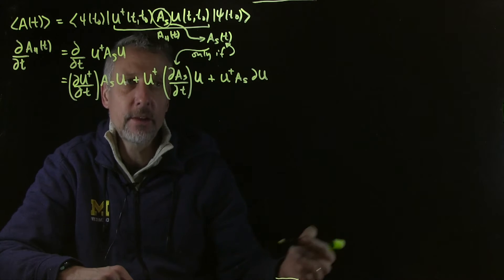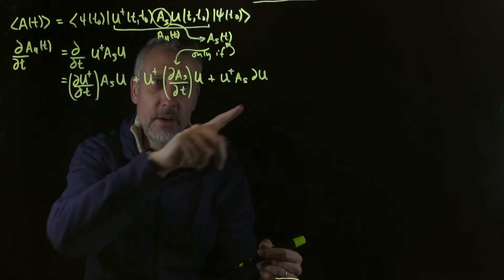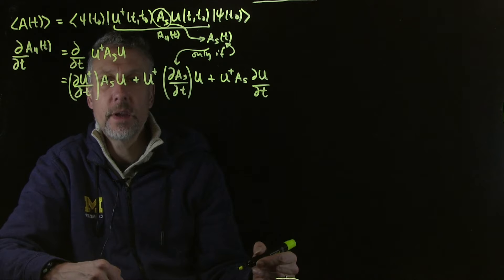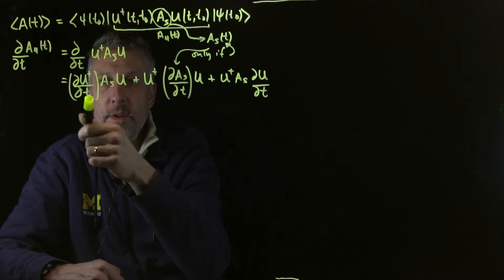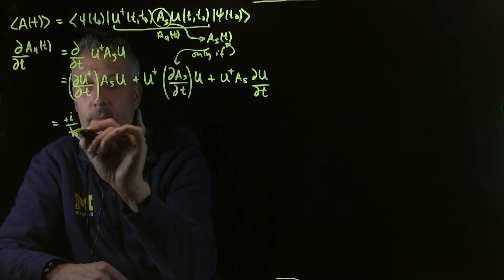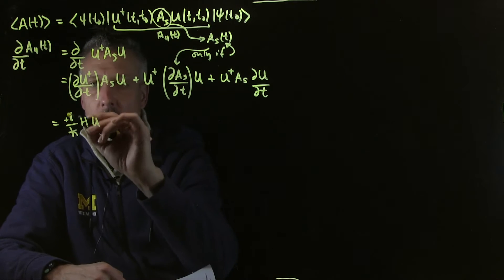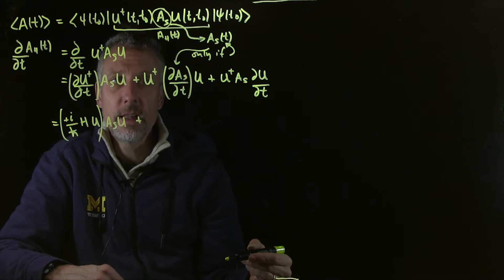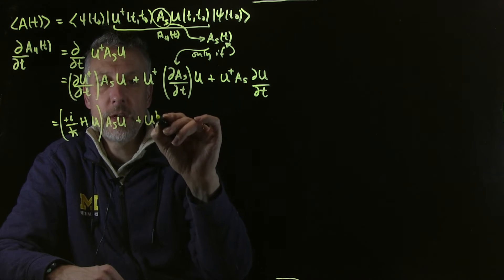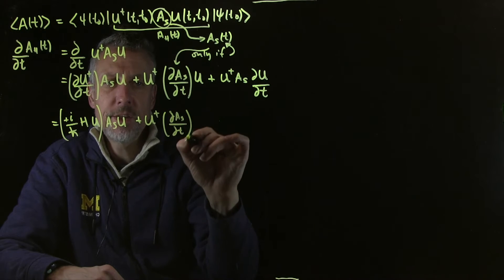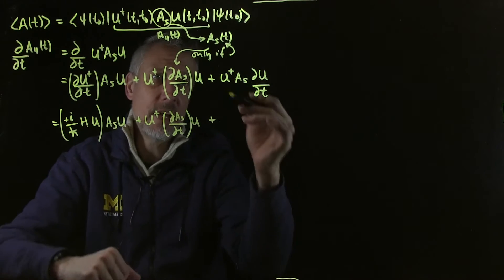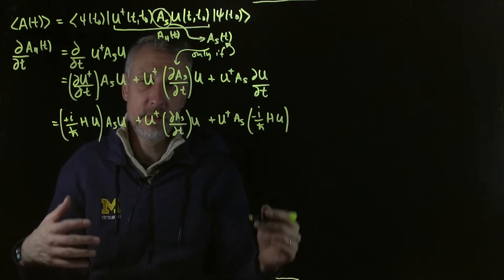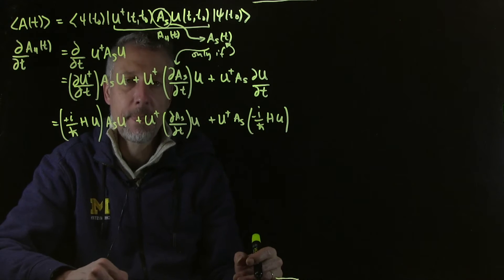Now what do we know about the time derivative of u? We just did this. We're going to use the Schrodinger equation for the time evolution operator, something we derived a while ago and used again last time. Just keep track, this is the dagger one, this is the normal one. So the dagger one is going to be plus i over h bar, and then h and then u in this order. So this is what's in this parenthesis here. Then as, then u. The middle term, nothing happens with the middle term, so I'm just going to leave it like this. I'll have to just keep bringing it along with us. Then we have the last term, u dagger as, and then we plug in the normal Schrodinger equation. So that's minus i over h bar, and then h times u. Now this h is the real h, whatever h is.